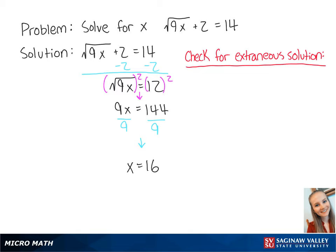Now we have to check for an extraneous solution, so we'll plug x equals 16 into the original equation. This gives us the square root of 9 times 16 plus 2 equals 14. This gives us 14 equals 14, which is correct, so the final solution is x equals 16.